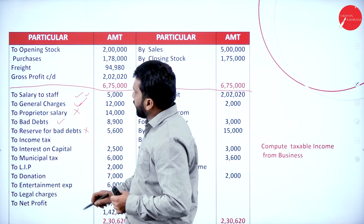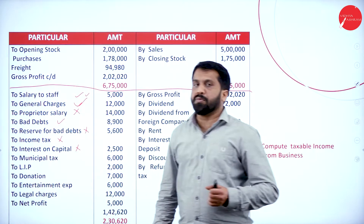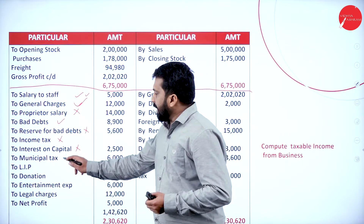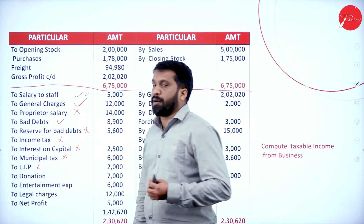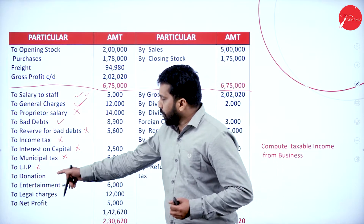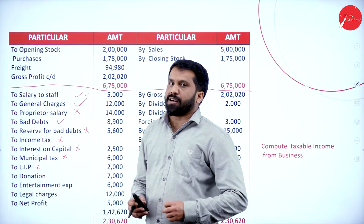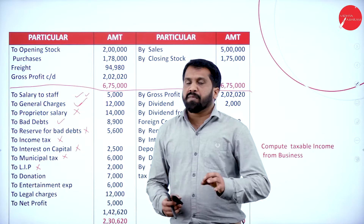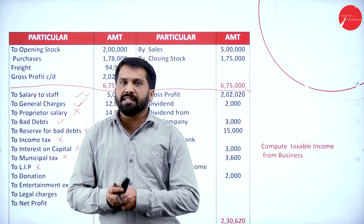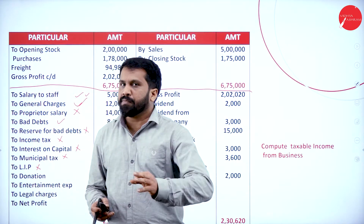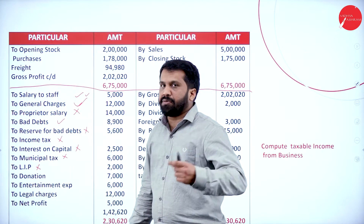Reserve for bad debts, income tax, interest on capital — capital is personal. Municipal tax paid on a house, life insurance premium paid for personal reasons, and donation — we need to check: if donation is paid for a trade association, then it is part of the business. We have to check the adjustments.